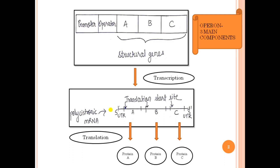Mostly, the products of the structural genes of the operon are involved in a single pathway. For example, the pathway could result in the metabolism of a nutrient such as sugar, or it could be a pathway used for the synthesis of a nutrient, for example, an amino acid.